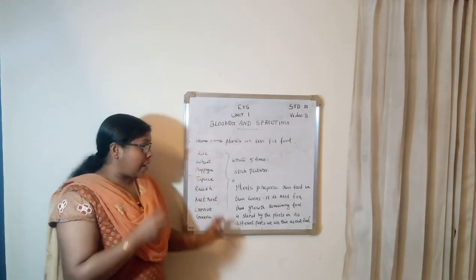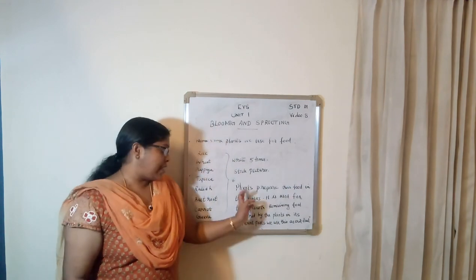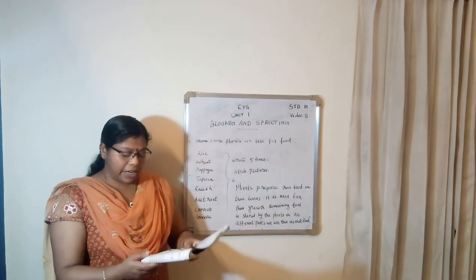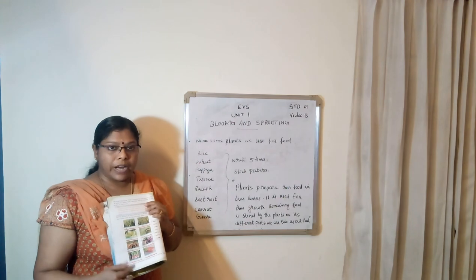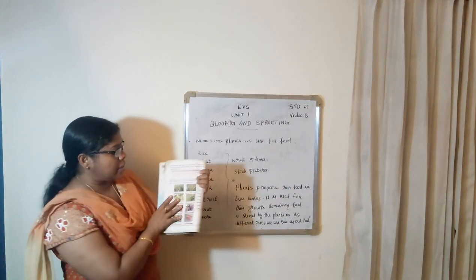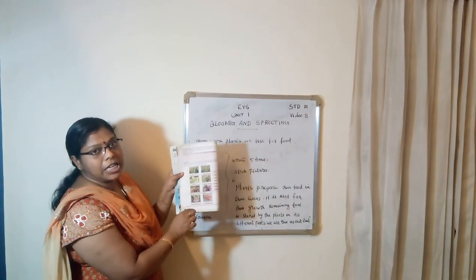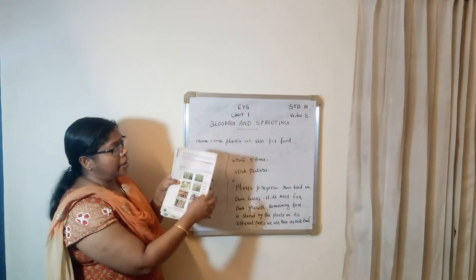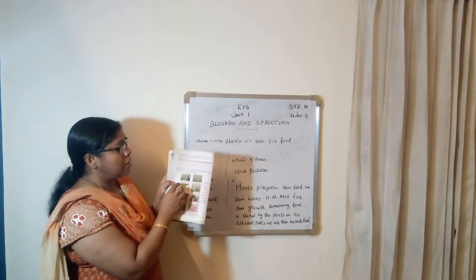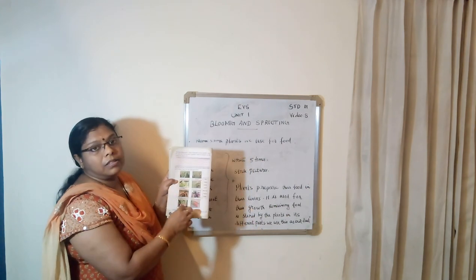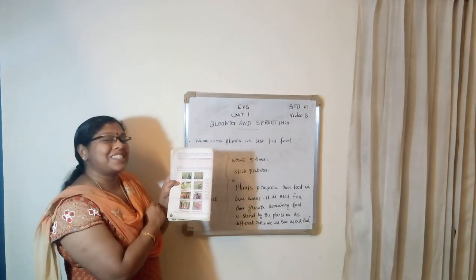Just copy this and write 5 times. Next Saturday, I will take dictation. And take out page number 14, read this page 5 times. Since some pictures are there, write the name under each picture. Then give the names in the column — select from here and fill in the blanks. Do this and send to me. See you next class.